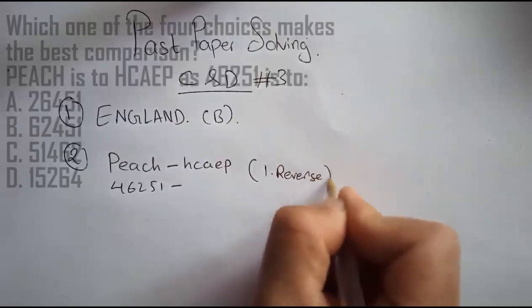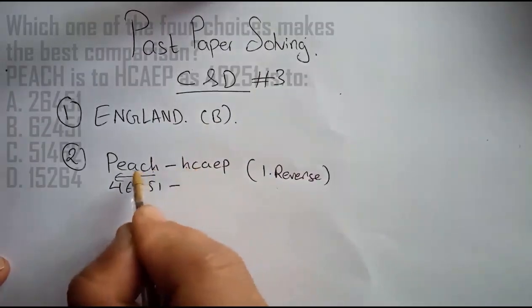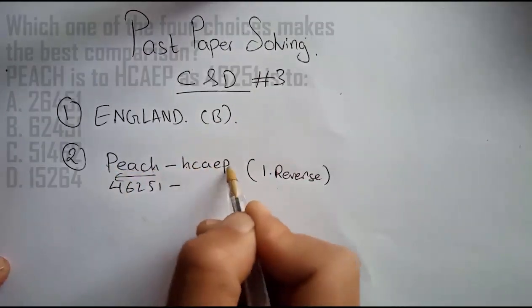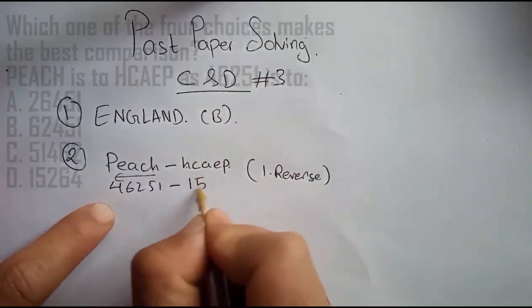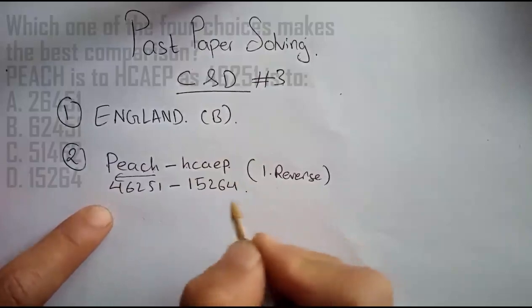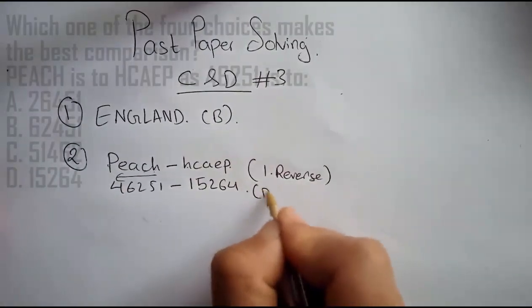Simply reverse it. H-C-A-E-P becomes one-five-two-six-four. So you write one-five-two-six-four. Option D is the correct answer.